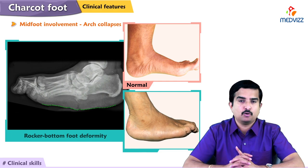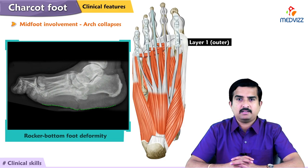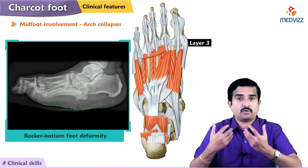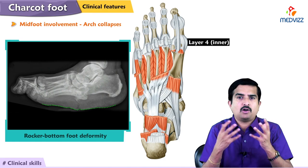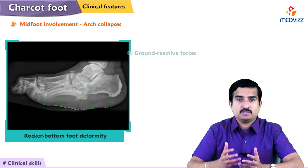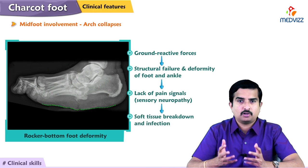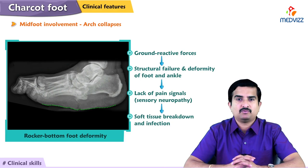The foot and ankle contain many soft tissue structures including extrinsic and intrinsic tendons, various ligaments, and support structures that transfer energy and ground reactive forces during locomotion. Under weakened conditions, these forces lead to structural failure and deformity, and with ongoing pressure and lack of pain signals due to sensory neuropathy, soft tissues are at higher risk for breakdown and infection.